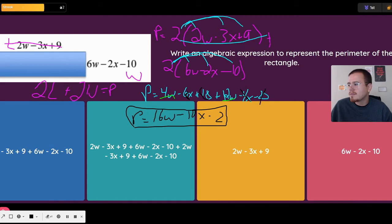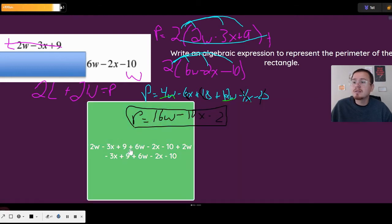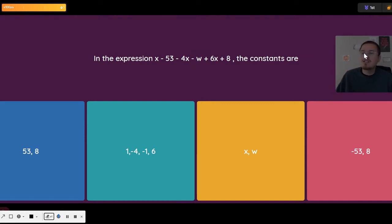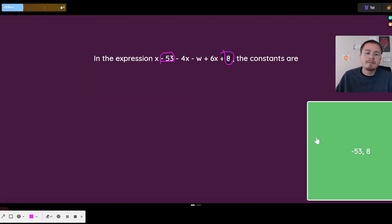Bonus! All right, the constants. What's a constant? Something that's not changing, like me being an awesome math teacher. The only constants that I see are the 8. That's the only number that I see. Oh I lied, negative 53 is also a constant. Constants are just numbers that don't change.